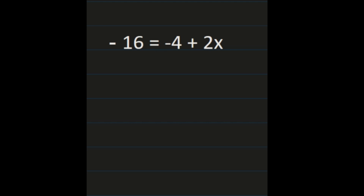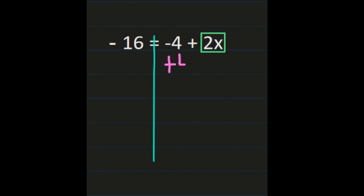For our next example, we have negative 16 equals negative 4 plus 2x. We're going to start by looking at the 2x, because that is what we need to isolate. Go ahead and box that up and put the line down the center of your equal sign so you can see that whatever you do to the left, you're also doing to the right. We want to isolate 2x first, and right now I have negative 4 plus 2x, so the inverse of the negative 4 is to add positive 4 to the right-hand side, and also to the left-hand side.